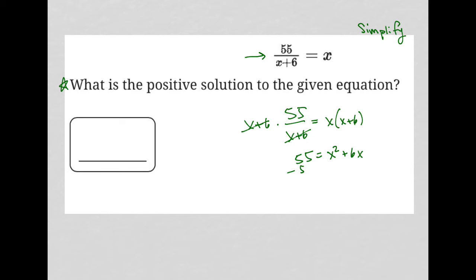I'm going to subtract 55 from both sides so that I have x squared plus 6x minus 55 equals 0. I'm going to then simplify this.